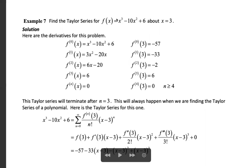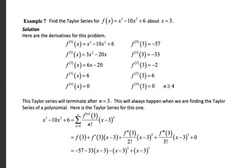The first derivative f'(x) = 3x² - 20x. At x = 3: 3·9 - 20·3 = 27 - 60 = -33. The second derivative f''(x) = 6x - 20. At x = 3: 18 - 20 = -2. Wait — f''(x) = 6x - 20, so f''(3) = -2. The third derivative is 6. The fourth derivative equals zero, and all derivatives are zero for n ≥ 4.